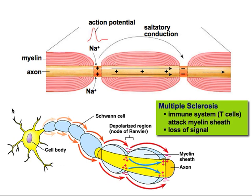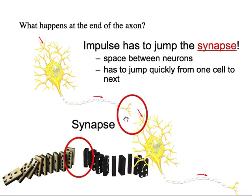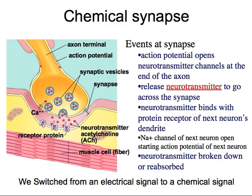A signal starts at the dendrite, moves to the cell body, and travels down the axon — that's just one neuron. But what happens at the next neuron? As you can see, those neurons don't touch, which prevents false signals. However, we have to get messages across that space, and that space is called the synapse. Somehow the message needs to get from this axon to the dendrites of the next cell so the next neuron can fire.